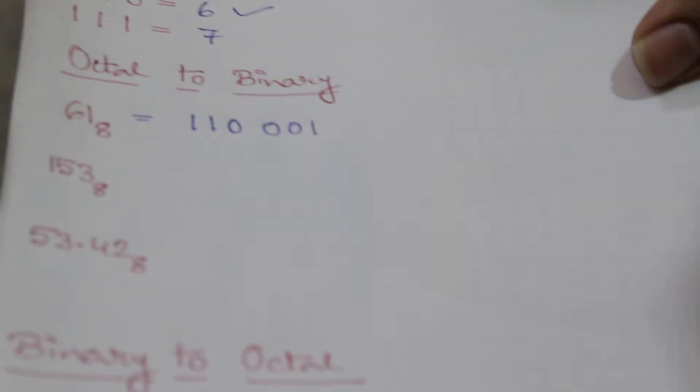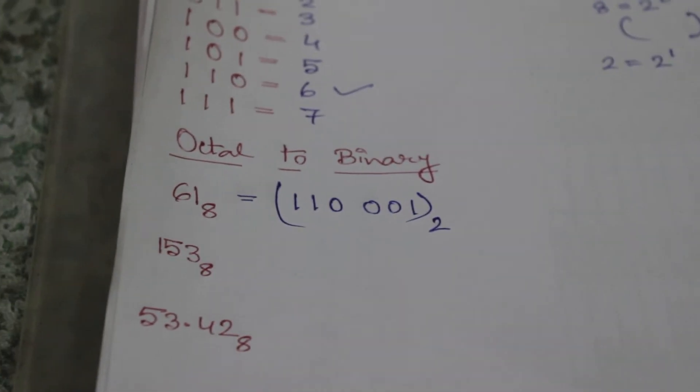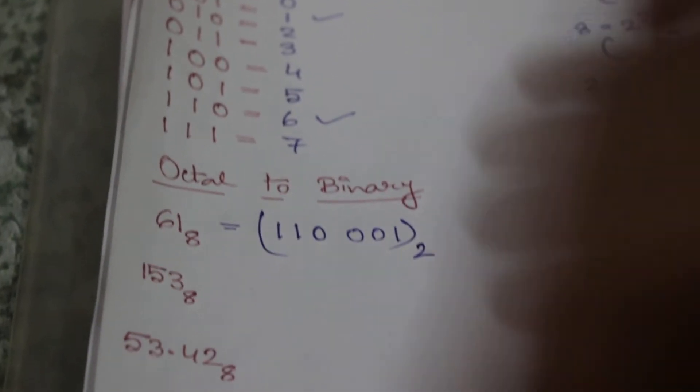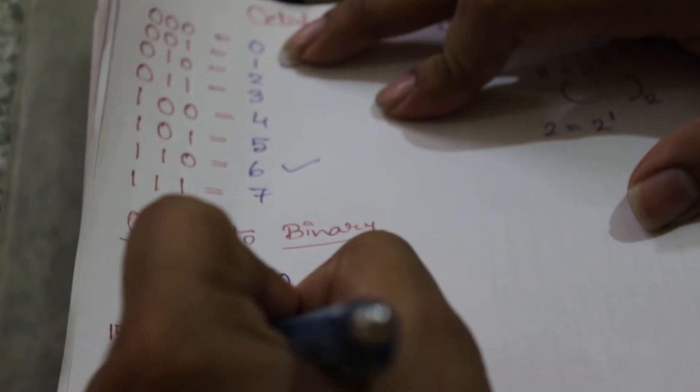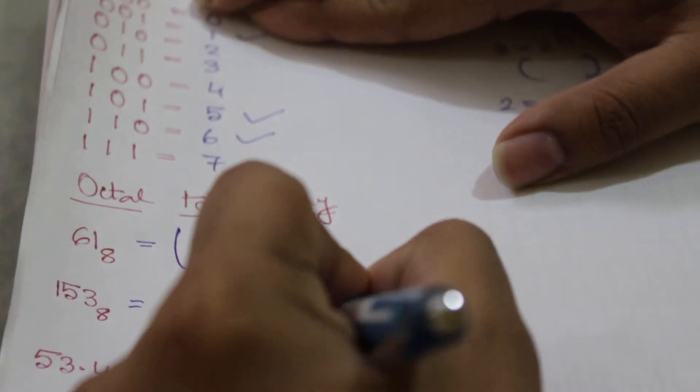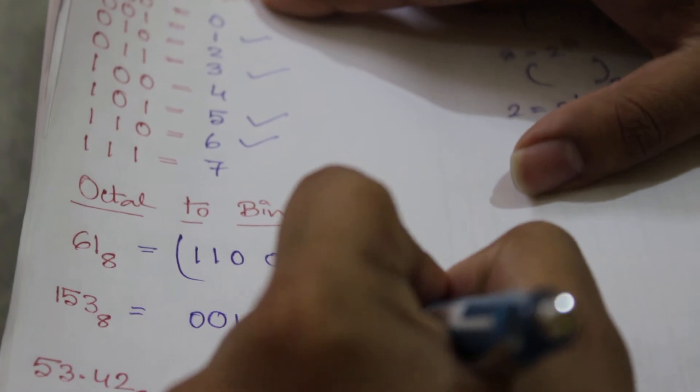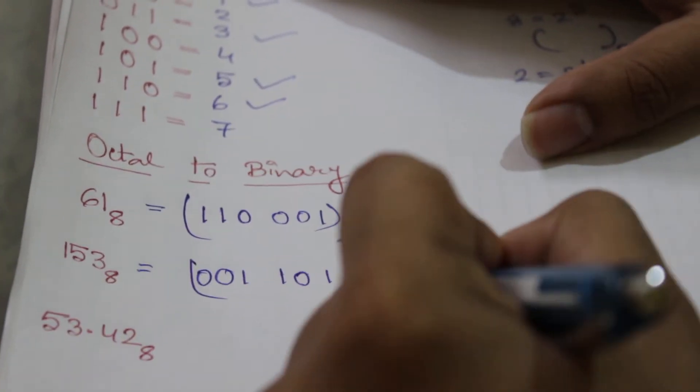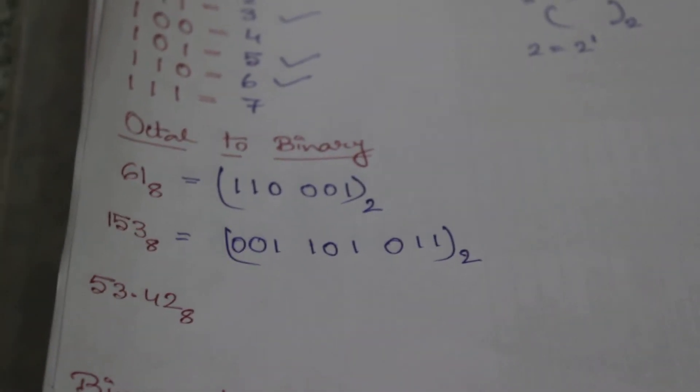Let's have one more example, one five three. One we will get from here, this is zero zero one. Five is one zero one, and three is zero one one. So this is its binary equivalent.